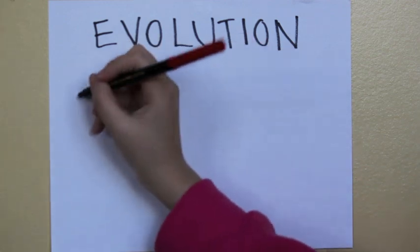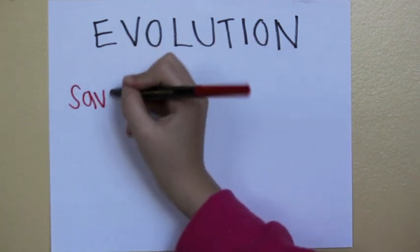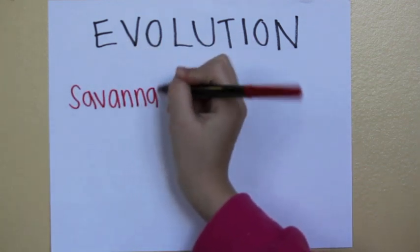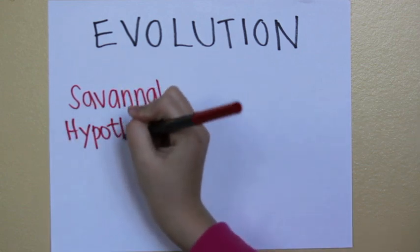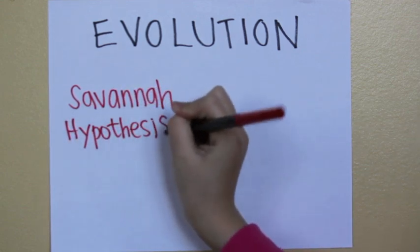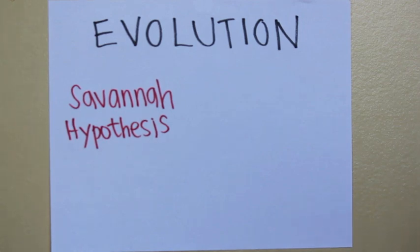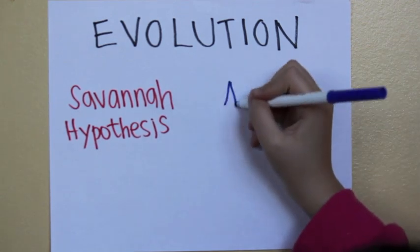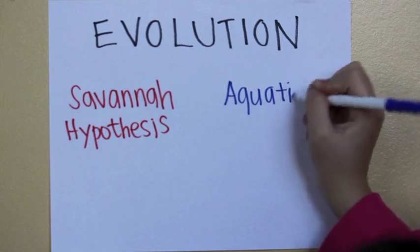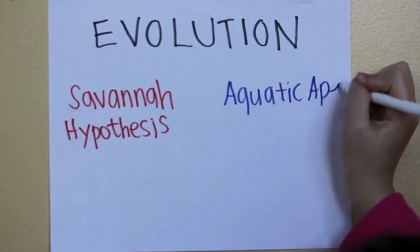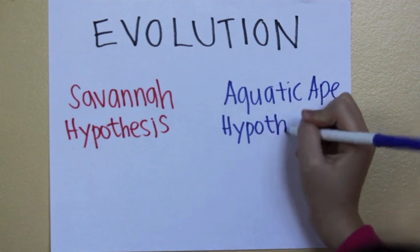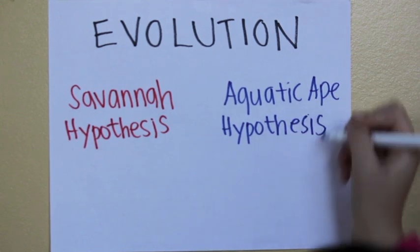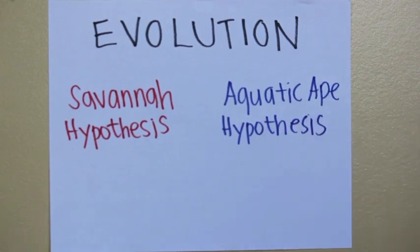In order to delve further into figuring out why we are who we are and why we work the way we do, we must look at reproduction. More importantly, why has evolution led humans to give birth the way we do? Childbirth in humans is riskier, longer, and seems more painful than it is in any of our genetic cousins. Scientists believe that has to do with big brains, bipedalism, and backward-facing babies. There are two different theories about how humans shifted from all fours to two feet, the conventional savanna hypothesis and the more interesting aquatic ape hypothesis.